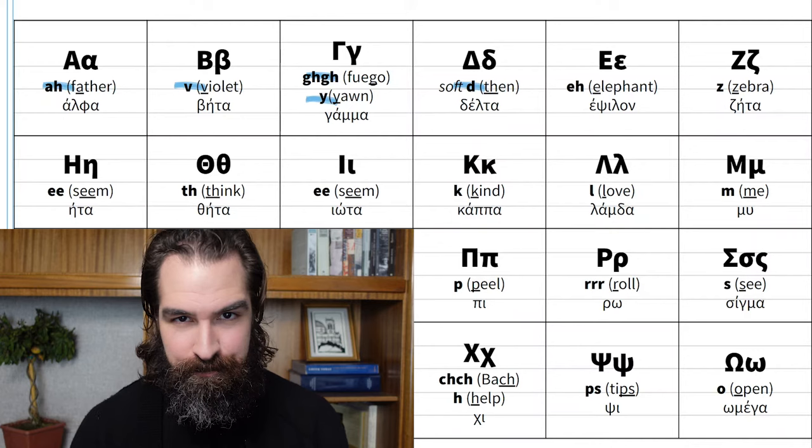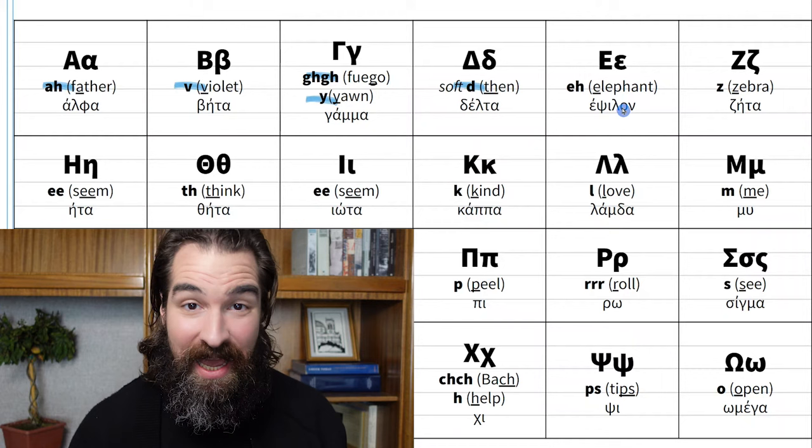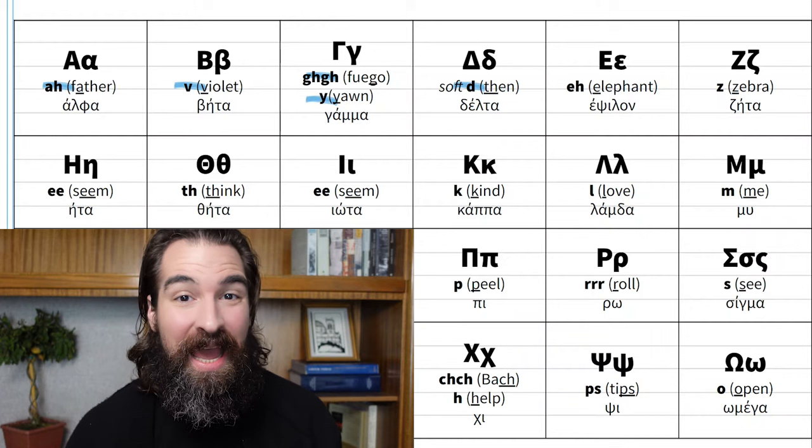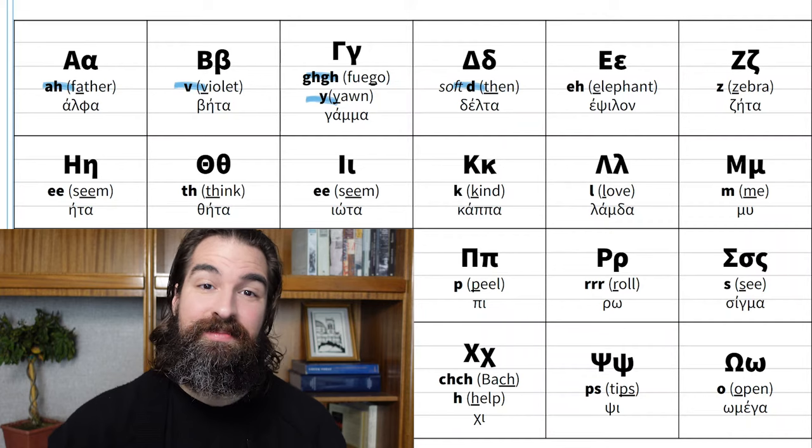Epsilon looks like an E and always makes a short E sound — 'e,' never a long E. Just like in the word 'elephant.' Then sticking with animals, we have zeta. Zeta looks like a Z and sounds like a Z, just like 'zebra.'